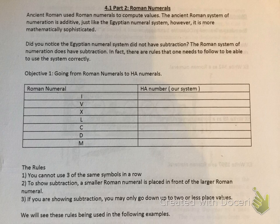We looked at the Egyptians in part 1 and now we're on Roman numerals. The ancient Romans used Roman numerals to compute values. The ancient numeral system of numeration is additive, just like the Egyptians. However, it's more mathematically sophisticated. The Romans were able to use subtraction, so we're going to have some rules dealing with subtraction and addition.